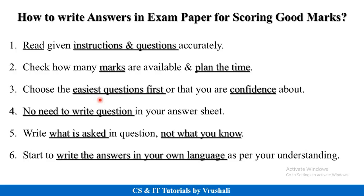Always choose the easiest question first. In the NSM exam paper, there are options like question number one or question number two — choose the easiest one first so you feel confident about your paper. No need to write the question — you can directly start with the answer, but always give the correct question number, like question number 1a or question number 1b. Write only what is asked in the question, not everything you know about the topic. Write exactly what is asked — like explain, types, advantages, or applications.